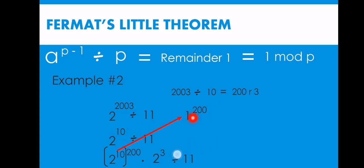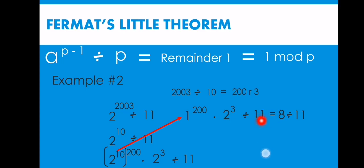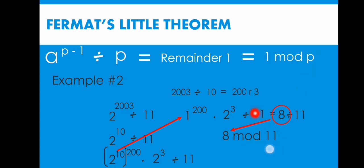Since 2 raised to 10 is already in the form of Fermat's Little Theorem, it converts to 1, leaving us with 1 raised to 200 times 2 raised to 3, divided by 11. Now, 1 raised to 200 is simply 1, and 2 raised to 3 is 8. So we have 8 divided by 11. Since 8 is already smaller than 11, 8 is the remainder. The answer is 8 mod 11 — where 8 is the remainder and 11 is the divisor.